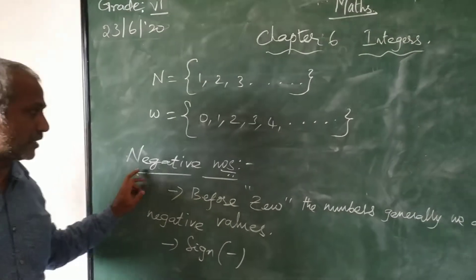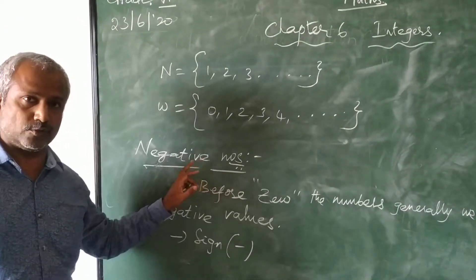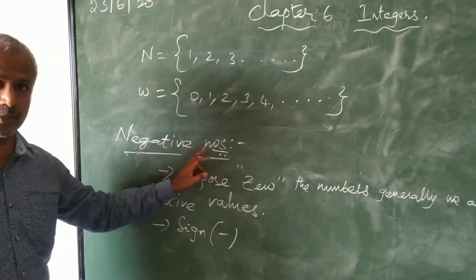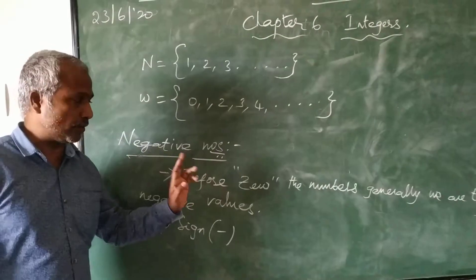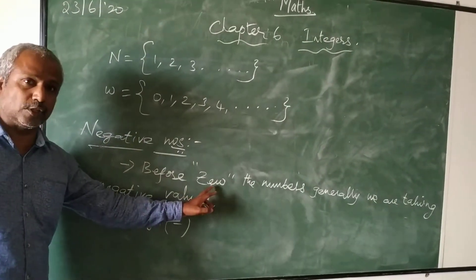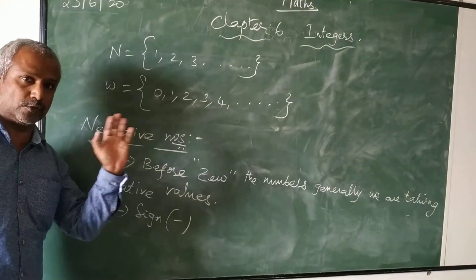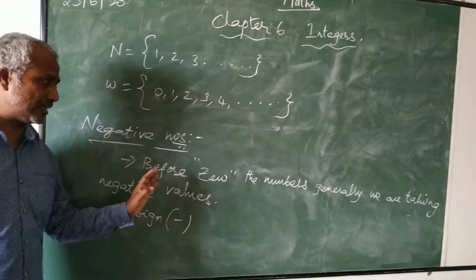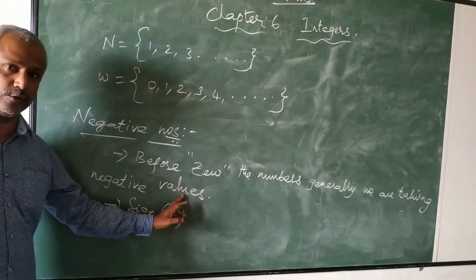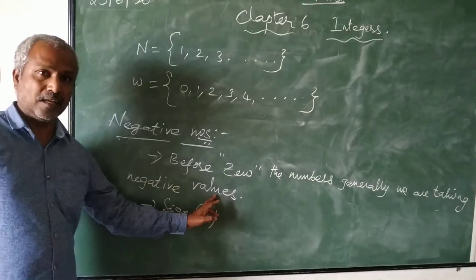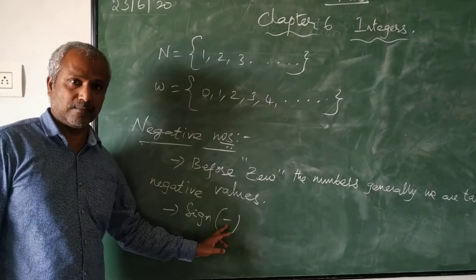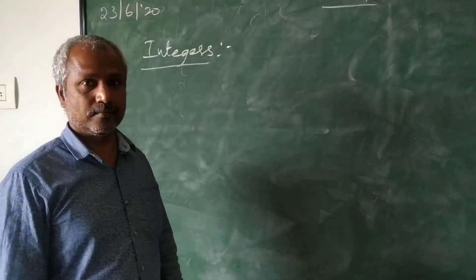Then we will move to negative numbers. We are not familiar about the negative numbers. Once we are considering the numbers before 0 — those are all taken as negative values. That will be denoted with a minus sign.